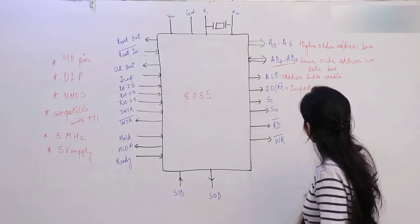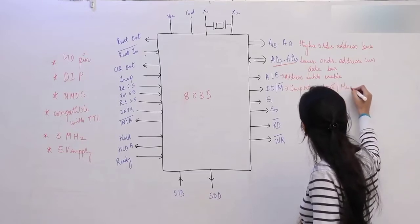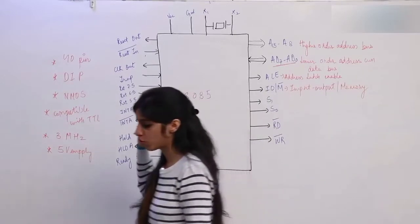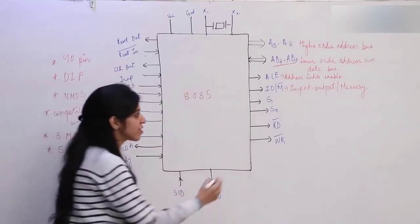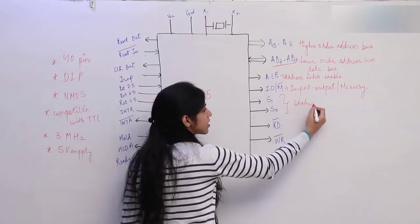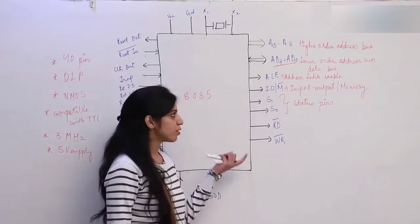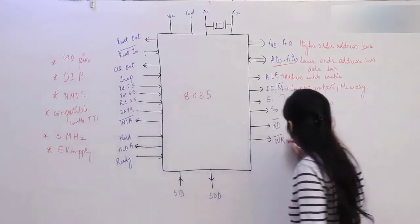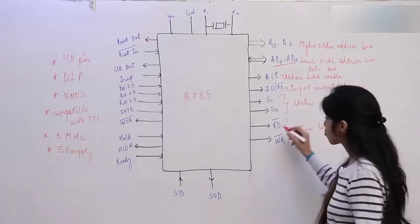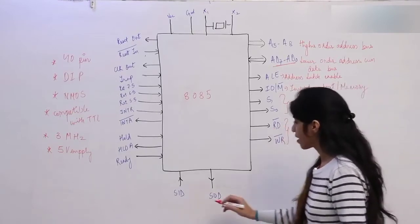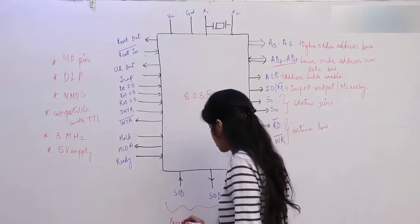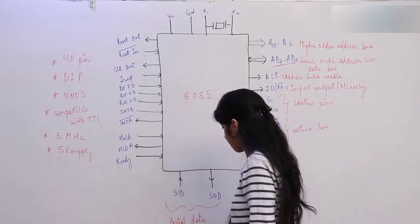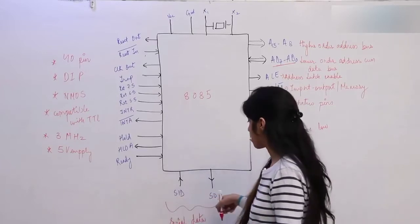The IO/M pin is used to select whether you want to work with input/output or with memory. S1 and S0 status pins tell you the status: whether you are writing to memory, reading memory, writing to input/output, or reading from input/output. RD-bar and WR-bar are active low pins used for reading and writing. There are also serial data communication pins: SID for serial input data and SOD for serial output data.